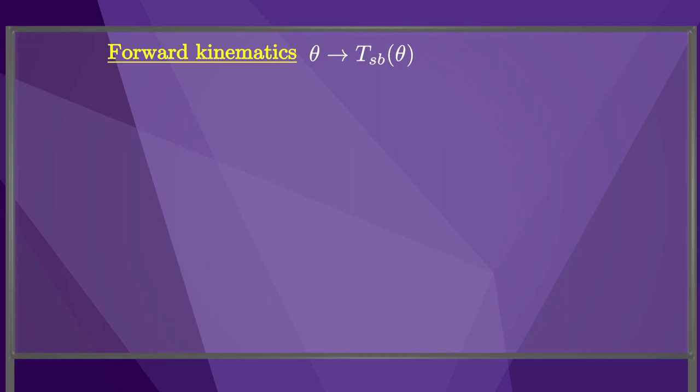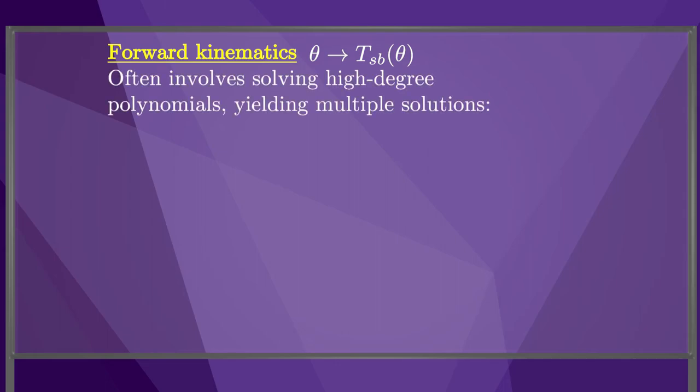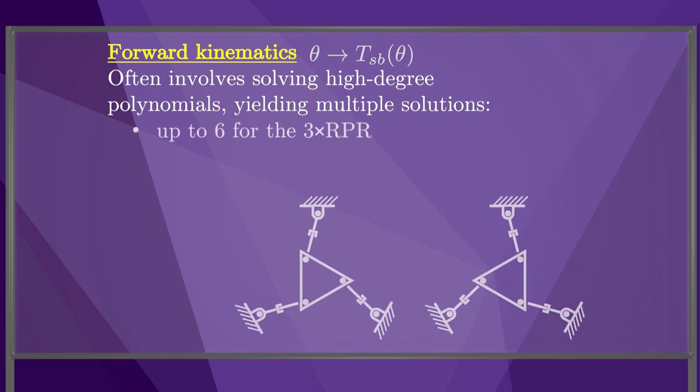Lastly, we addressed the forward kinematics problem for closed chains, which was the first problem we addressed for open chains. The forward kinematics problem often involves solving one or more complex nonlinear equations, and in general, the forward kinematics has multiple possible solutions. The 3 by RPR robot can have up to six possible end-effector configurations given a set of prismatic joint extensions. This figure shows two possible solutions when all joint extensions are equal.